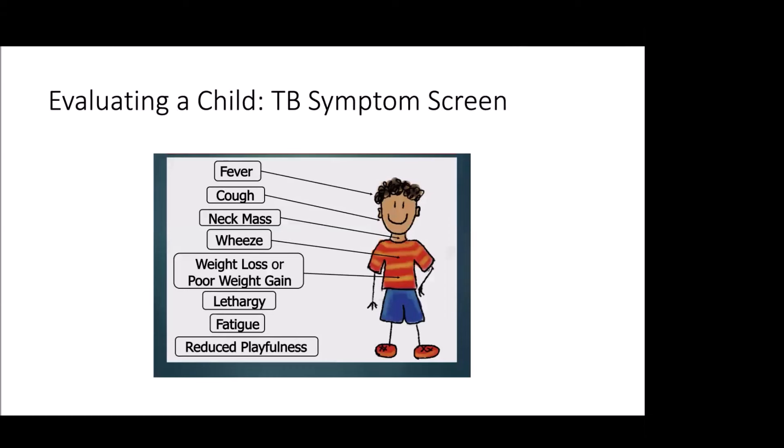This is the symptom screen tested in children less than 15. I ask about fever, cough, neck masses, wheeze — particularly wheeze that doesn't get better with albuterol — weight loss, but really in children sometimes it's poor weight gain, so understanding what their weight looks like over time is critical. I also ask about lethargy and fatigue. The number one finding I notice in contacts when TB disease is new or subtle is sort of reduced playfulness.